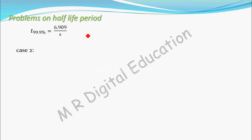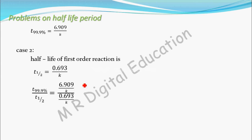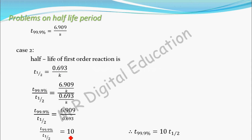Case two: the half life of a first order reaction is T-half equal to 0.693 by K. Call this equation 2. Now divide equation 1 by equation 2: T99.9% divided by T-half equals 6.909 by K, divided by 0.693 by K. Here K and K cancel out. What remains is 6.909 divided by 0.693, which equals 10. So you have proved that T99.9% equals 10 times T-half.